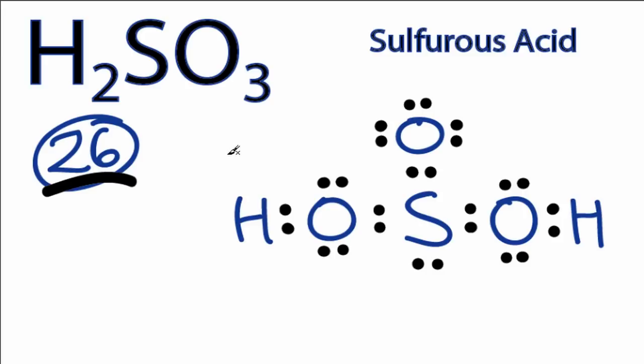Thing is, when you see sulfur, sulfur is in period 3 on the periodic table, sulfur can hold more than 8 valence electrons. So we really need to look at the formal charges for this molecule.